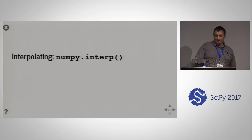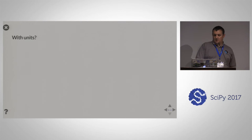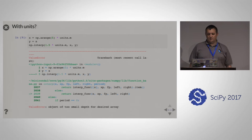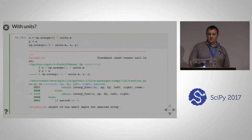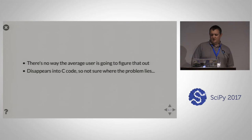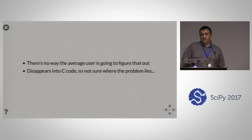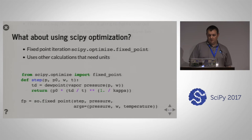What about interpolation? Here's how it looks for regular data — we interpolate a line, x equals y, and get 1.5. Now with units, we get a ValueError: 'object of too small depth for desired array.' All we did was make x have units of meters and the query value be in meters — unit-wise it works out, but it doesn't work with NumPy. There's no way the average user is going to figure out what that depth message means. And the call disappears into C code, so tracking down the problem is just hopeless.